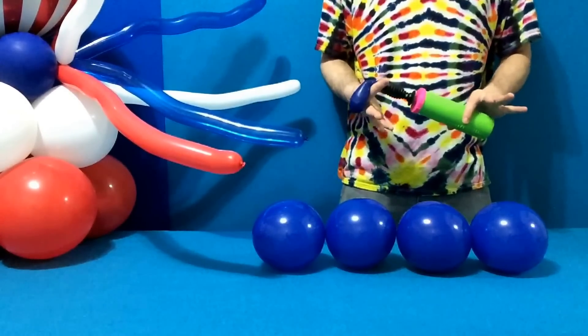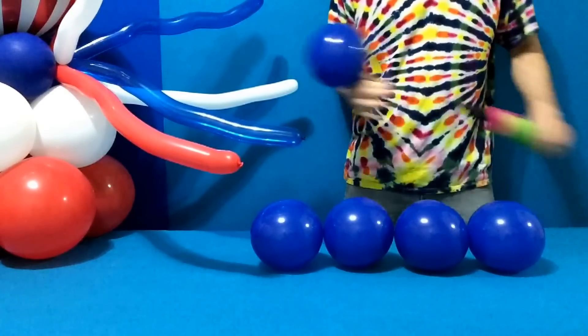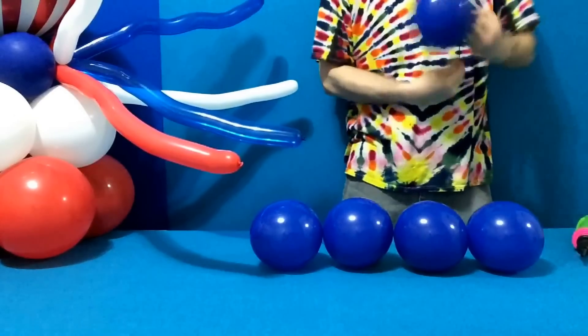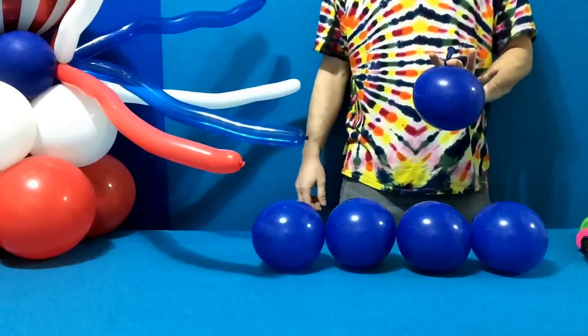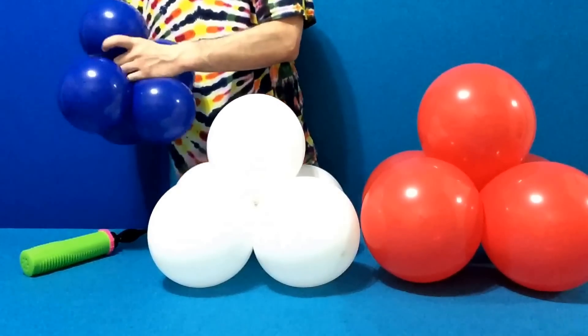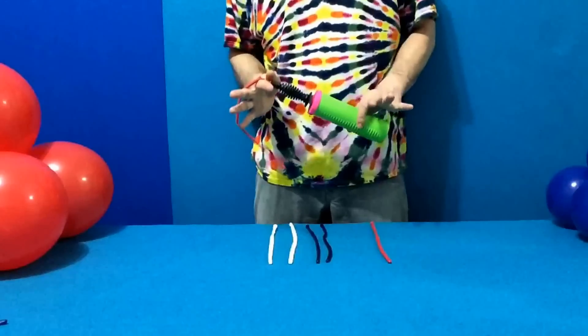Finally, inflate five round balloons, three pumps each. One, two, three. Repeat the same steps. Knot all those nozzles together, and you have your third and final quad.